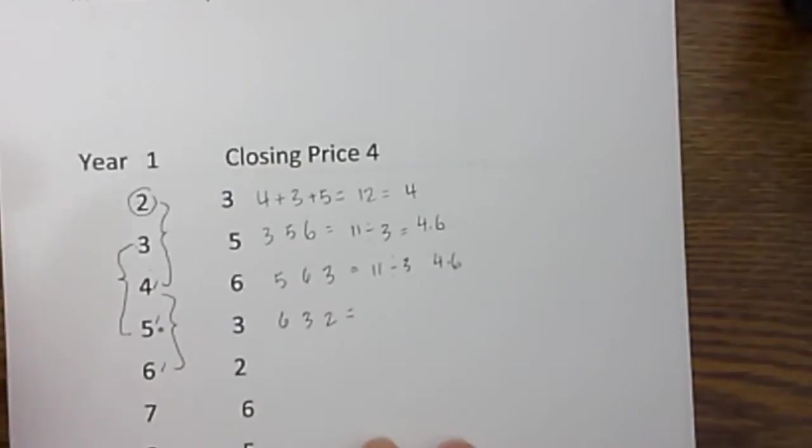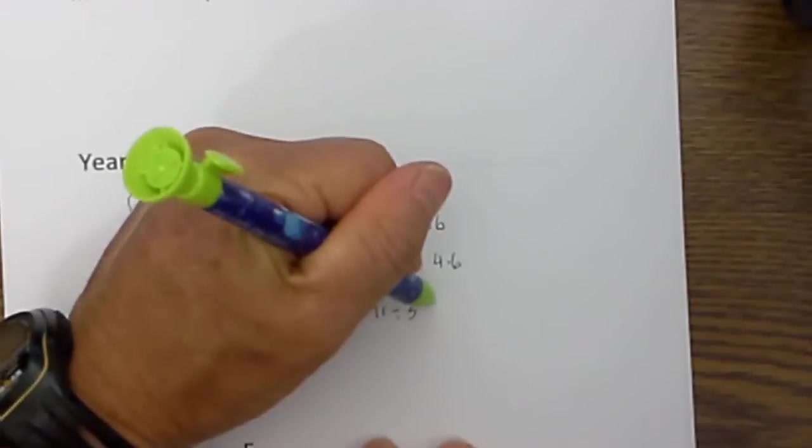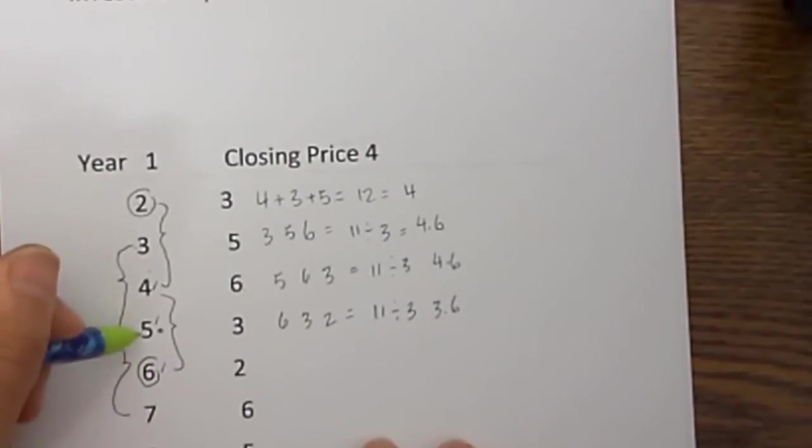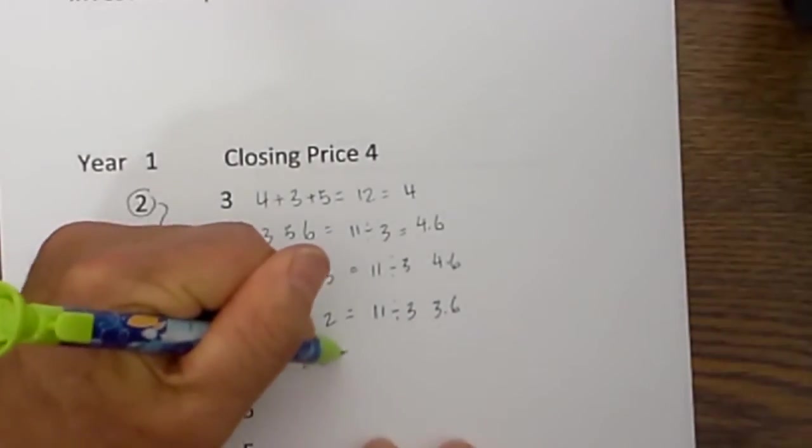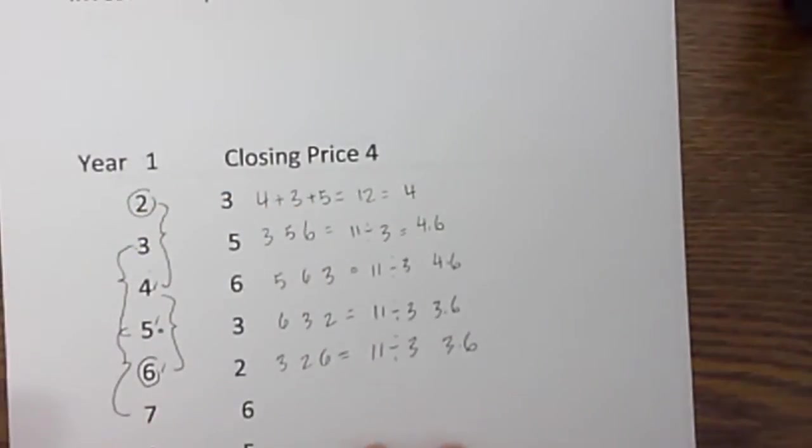When you add 6, 3, and 2 together it is 11, and 11 divided by 3 is 3.6. And then you repeat again. For year 6 it is 3, 2, and 6, and that is the exact same thing again, so that is 3.6, and then you would continue this all the way down.